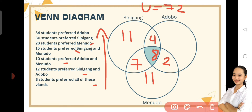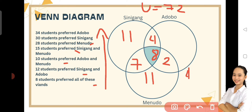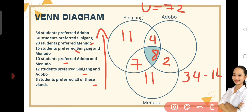Ngayon naman, proceed na tayo sa Adobo. I-add natin lahat. 4 plus 8 plus 2 is equals to 14. So, 30 minus 14 is equals to 16. So, 16 yung students na may gusto sa Adobo lamang.